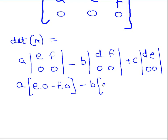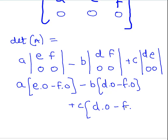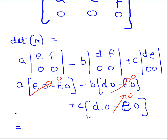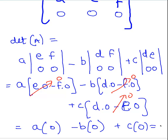Minus B times (D times 0 minus F times 0), plus C times (D times 0 minus E times 0). Essentially, each term cancels out to 0, leaving us with A times 0, minus B times 0, plus C times 0, equals 0. Job done — that will do for our first proof.